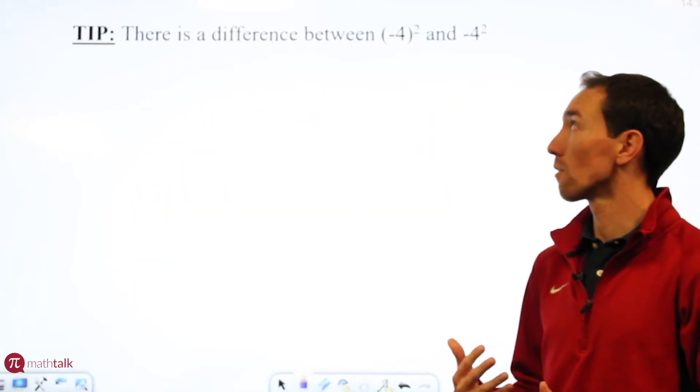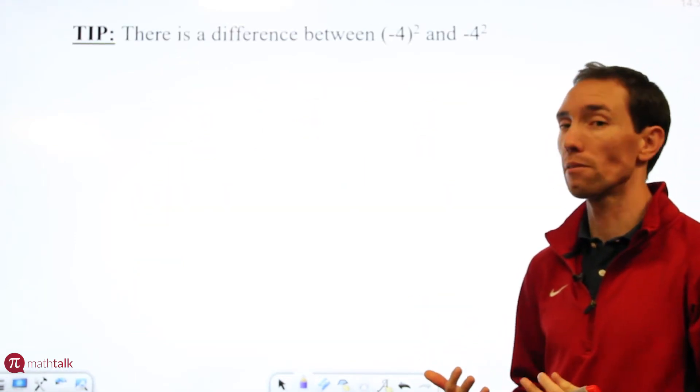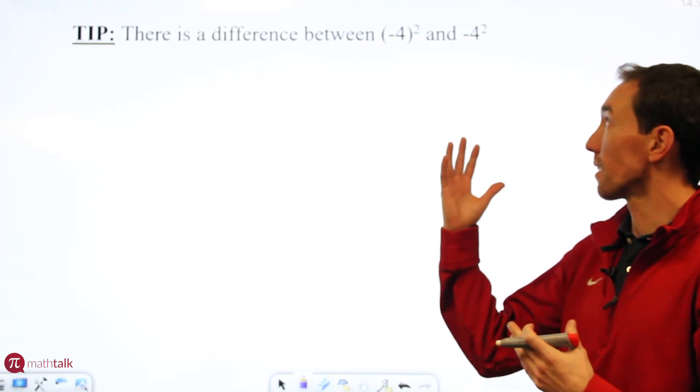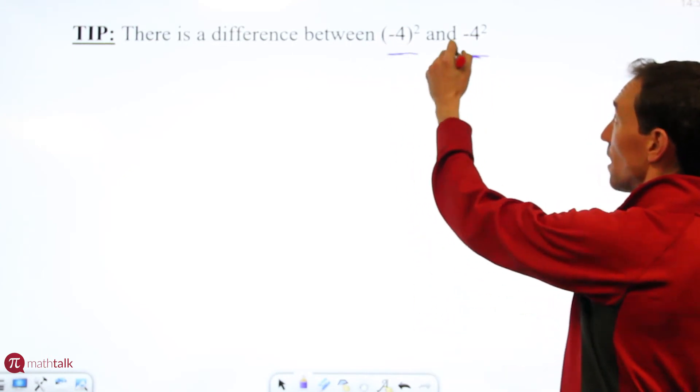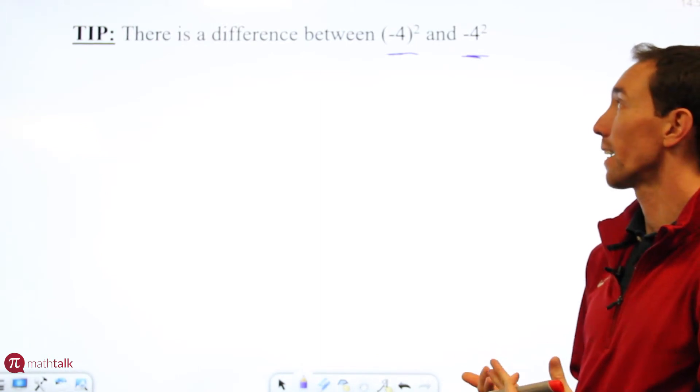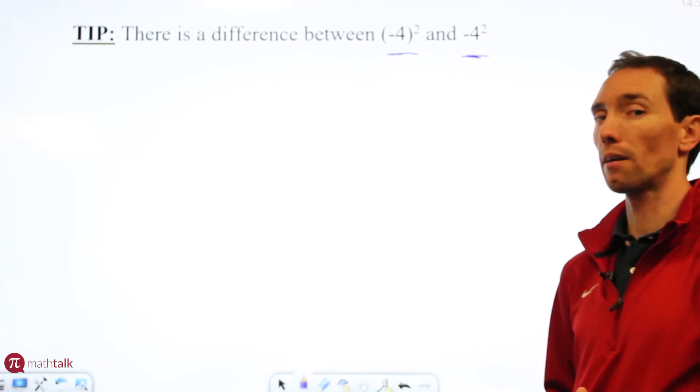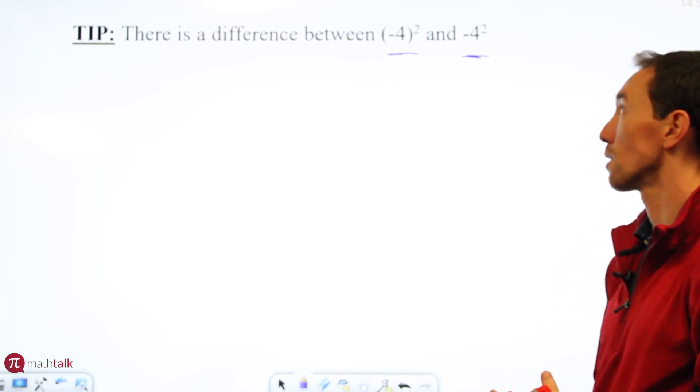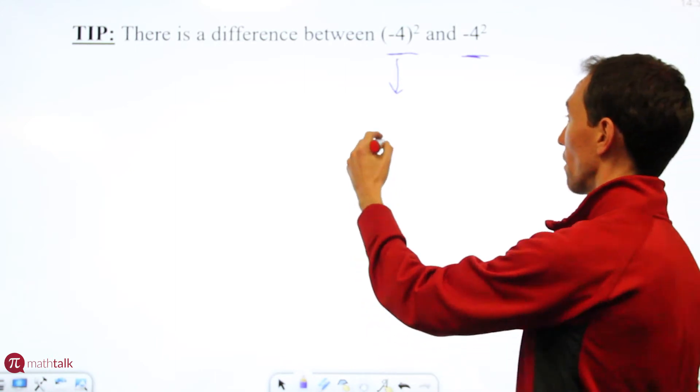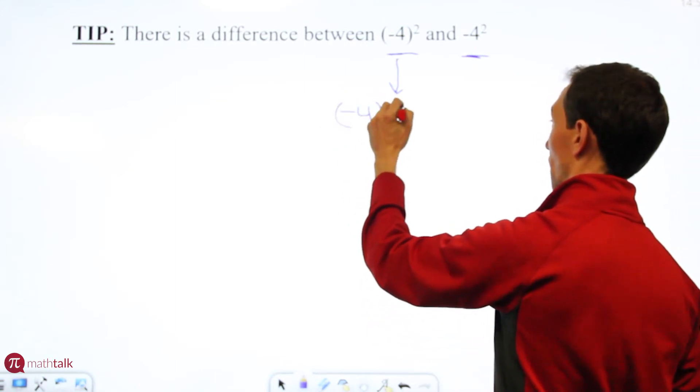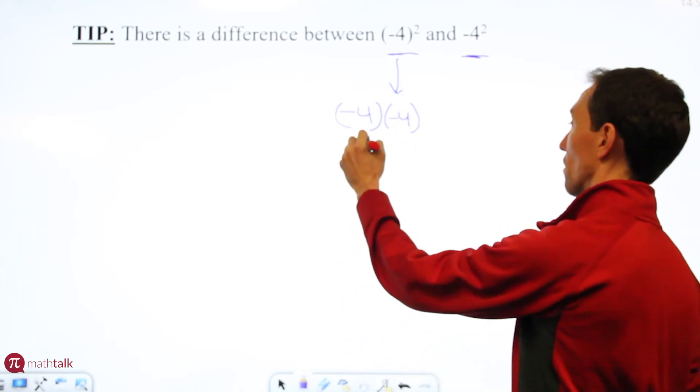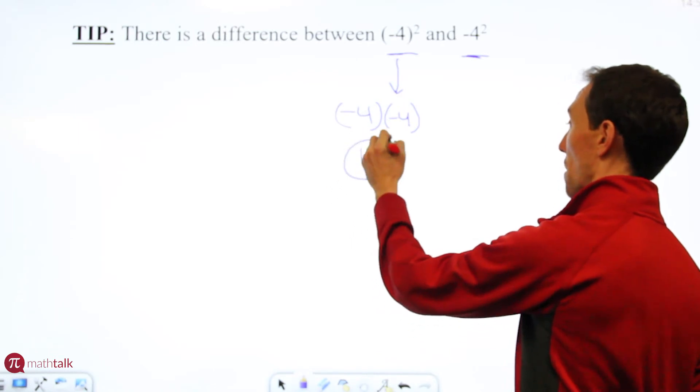We're going to take a look at another thing that has to do with squares and square roots, a little tip. I've seen some people make mistakes with examples like these as far as the value. There is a difference between the square of negative 4 and the negative of 4 squared, because in the first one here you're taking negative 4 times negative 4 and when you multiply two negatives together you get a positive value. So the answer for this is actually positive 16.